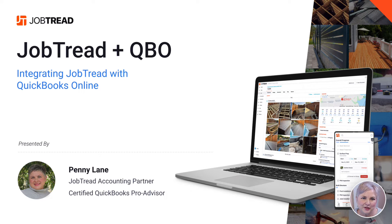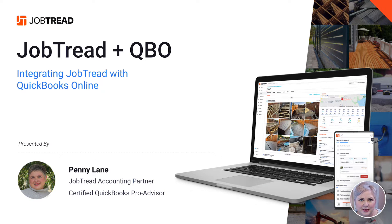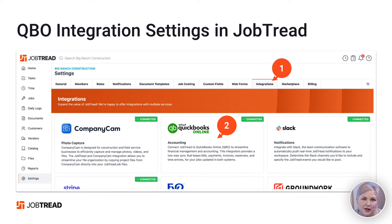Hi, Penny Lane here. In this short video we're going to go over the QuickBooks Online integration settings with JobTread. Integrating JobTread with QuickBooks Online is super easy. In JobTread, from the left menu bar you're going to choose Settings, then the Integrations tab, and from there you'll select QuickBooks Online.